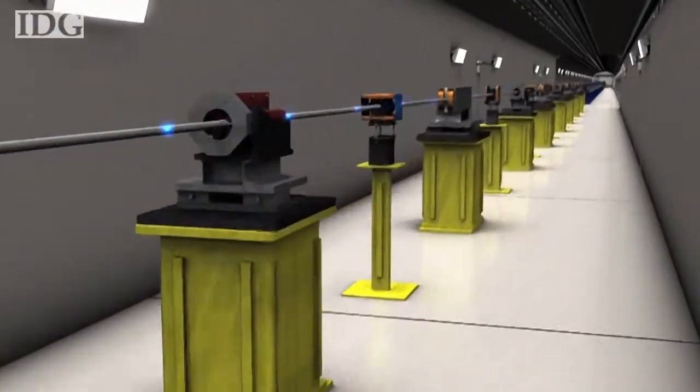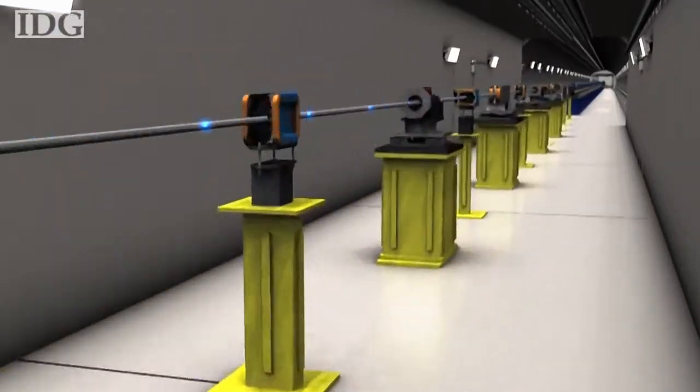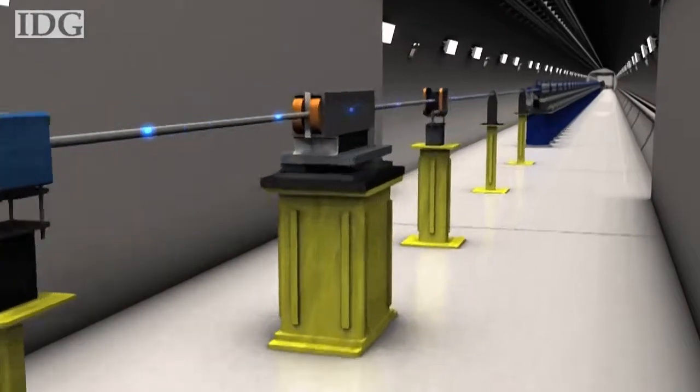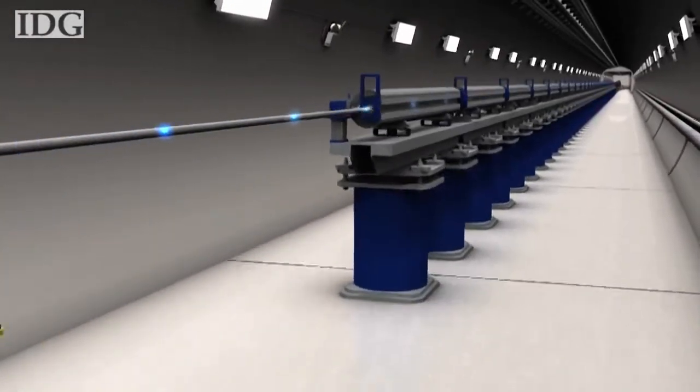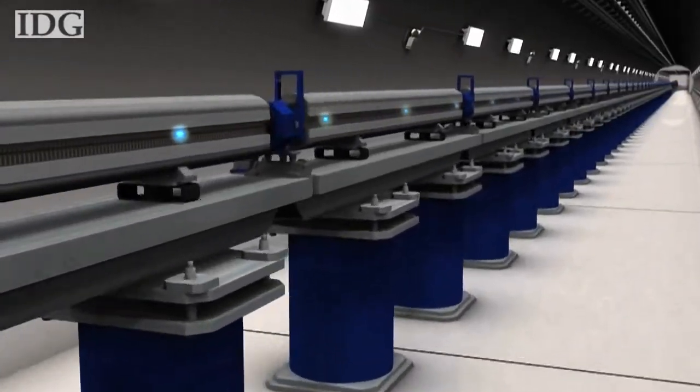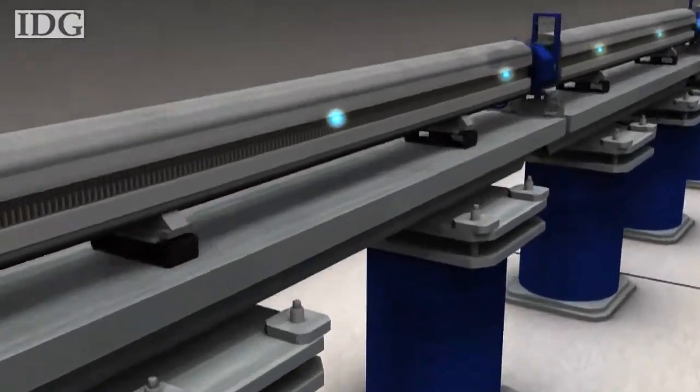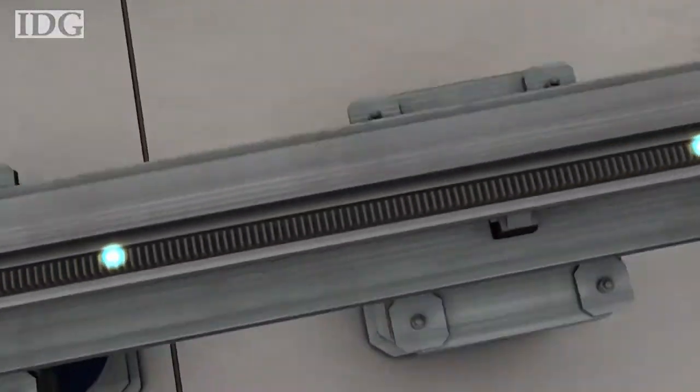The electrons then enter the beam transport hall, where a pipe, focusing magnets, and diagnostic monitors move the delicate beam from the accelerator into the heart of the LCLS, the undulator hall, where the x-ray laser light is generated.